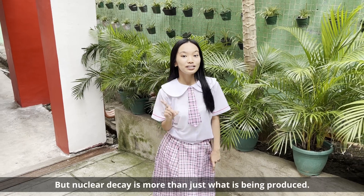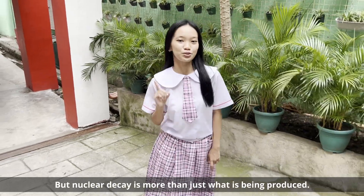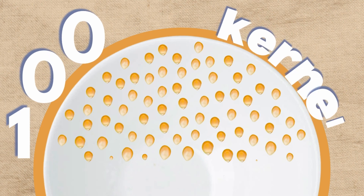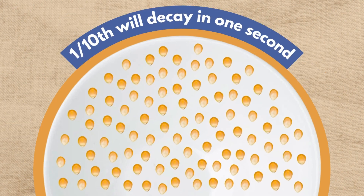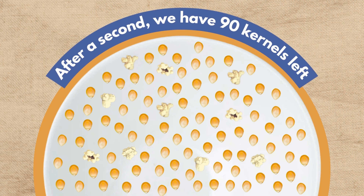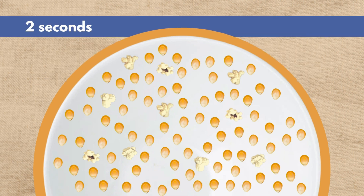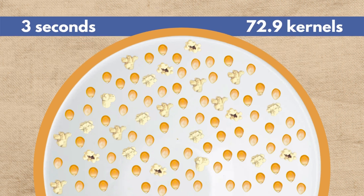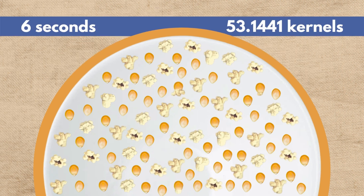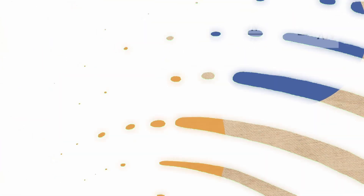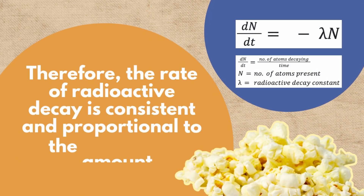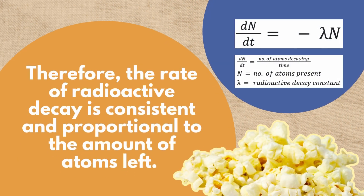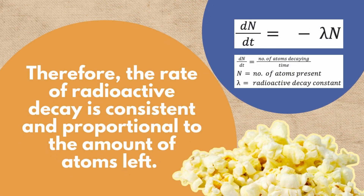But nuclear decay is more than just what is being produced. Let's say we have 100 kernels and one-tenth will decay in one second. After a second, we have 90 kernels left, and it will continue to decay at one-tenth per second and so on. Therefore, the rate of radioactive decay is consistent and proportional to the amount of atoms left.